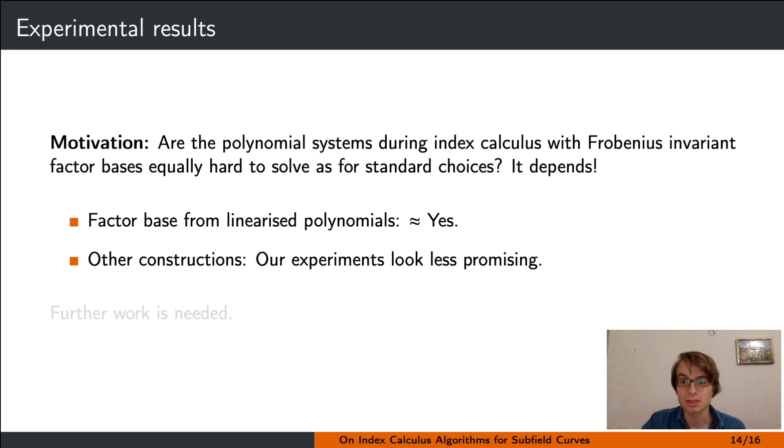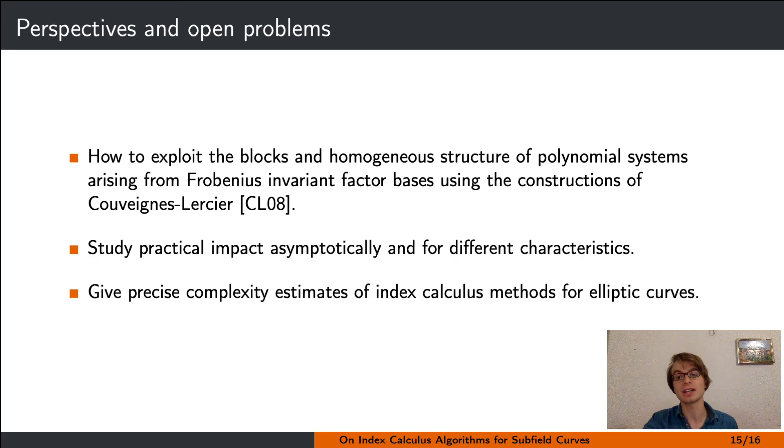When using the Frobenius invariant factor bases based on the constructions of Granger and Vercauteren, we have some additional homogeneous structure in the polynomial system which we solve using standard techniques. It is possible that improvements with respect to this structure are possible and make Frobenius invariant factor bases of this type actually more competitive.